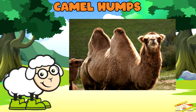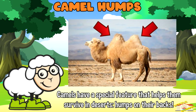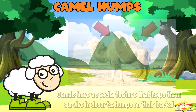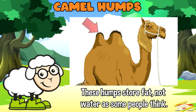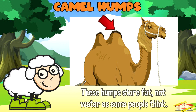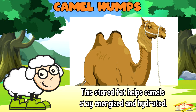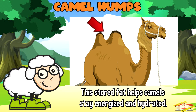Camel humps: camels, a type of ungulate, have a special feature that helps them survive in deserts — humps on their backs. These humps store fat, not water as some people think. This stored fat helps camels stay energized and hydrated during long journeys through the hot desert.